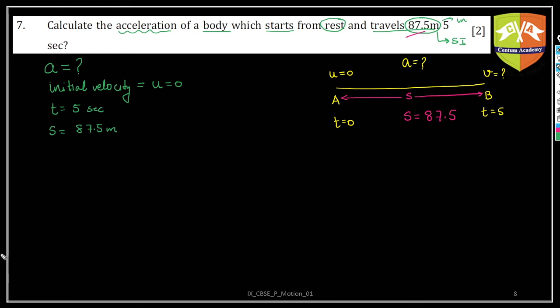Now how do we approach this? One way most students do is they first write down the three equations. v equals u plus at is the first equation of motion. Second one is s equals ut plus half a t squared. And the third one is v squared equals u squared plus twice as.